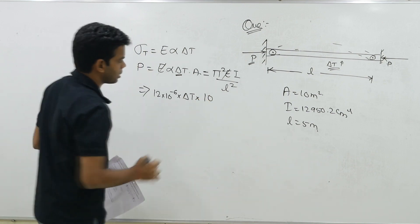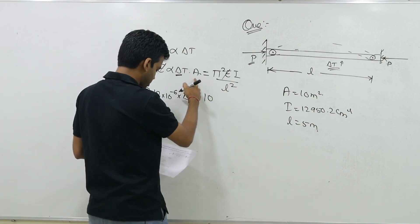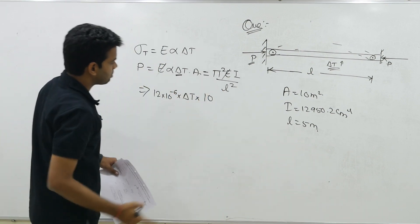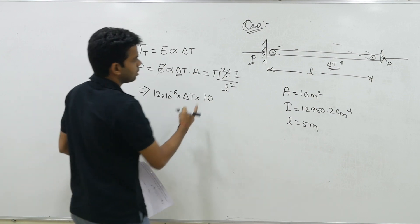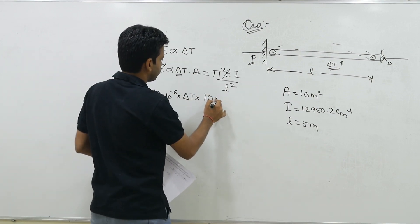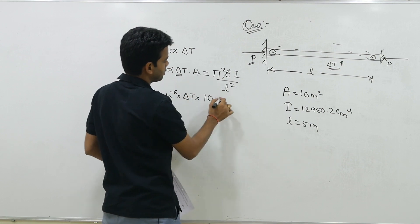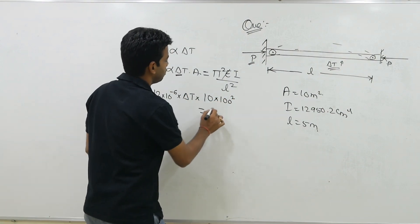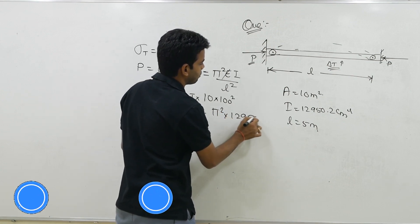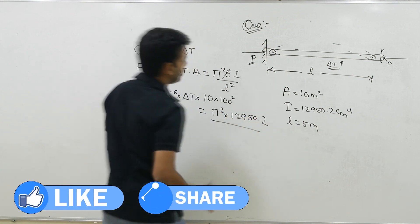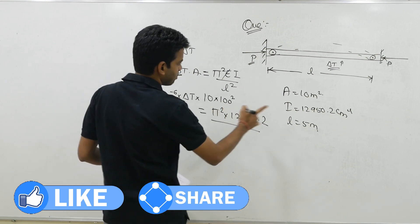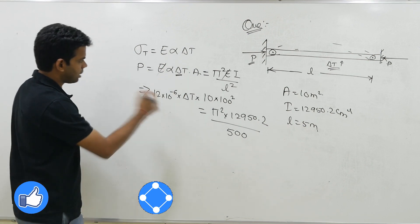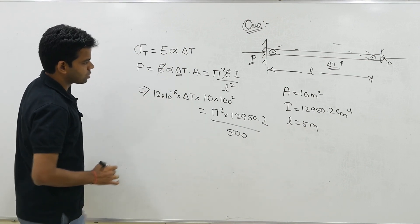Area jo hai wo meter square mein diya hai, so accordingly you will have to convert. Ya chahein to isko hum centimeter square mein convert kar sakte hain. So ye kya ho jayega? This will be equal to 10 meter square. 1 meter is 100 centimeter, into 100 square. This will be equal to pi square into I which is 12,950.2 divided by length. Length is given as how much? 5 meter or you can say 500 centimeter. So all the dimensions we have converted into centimeter.